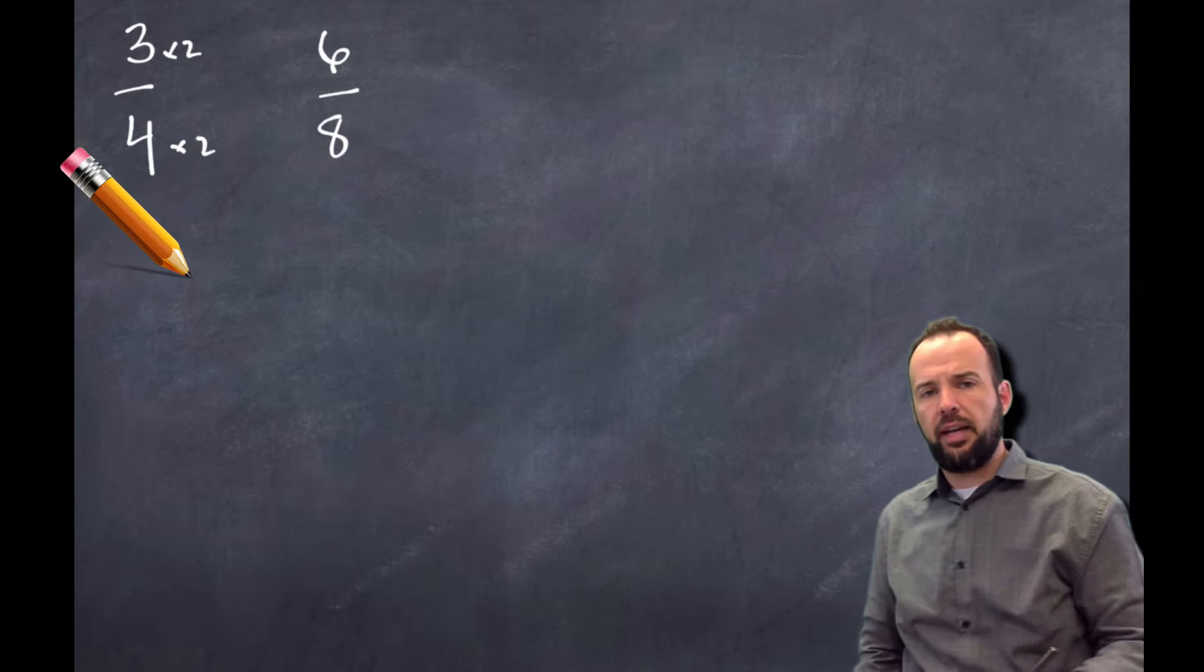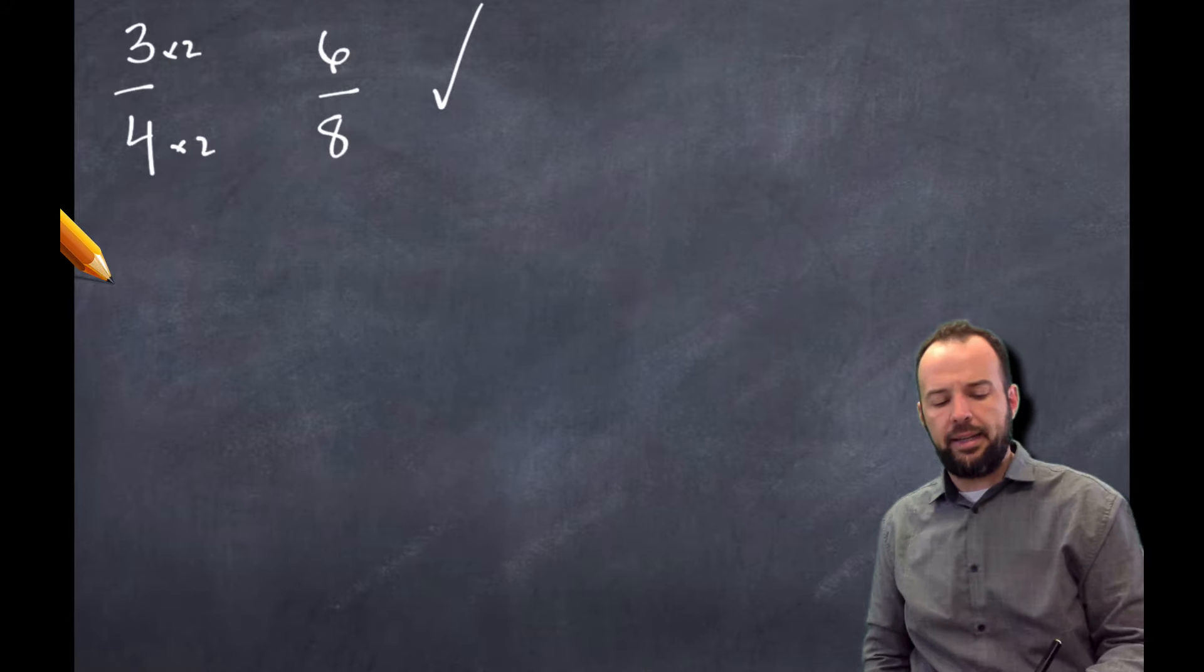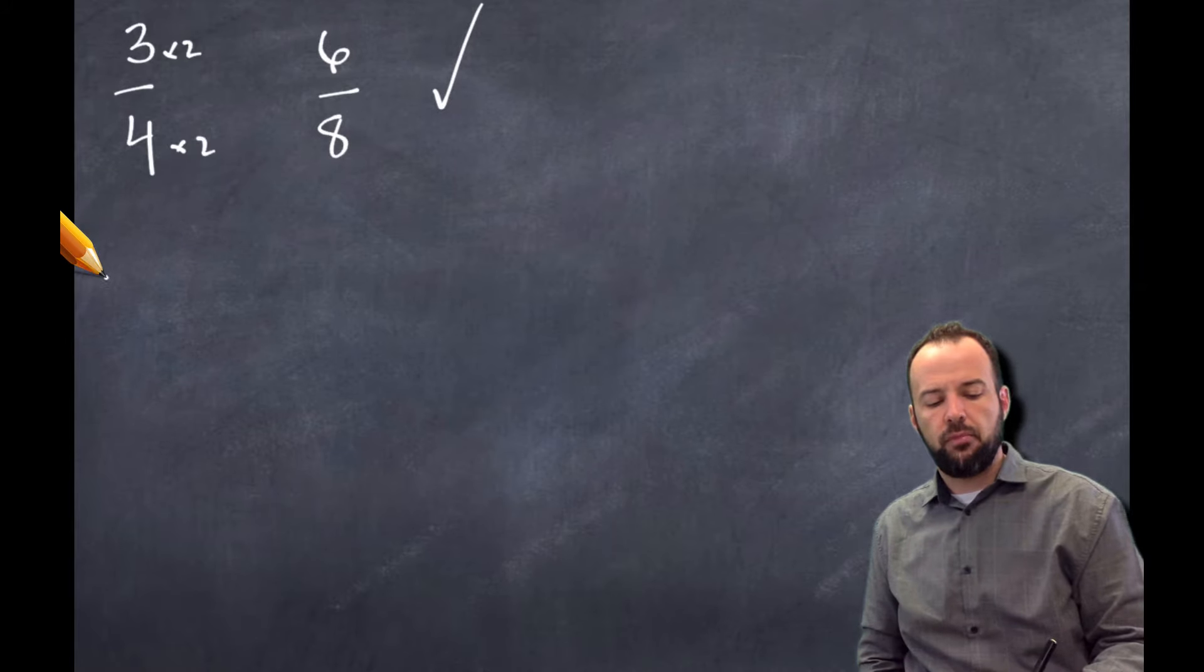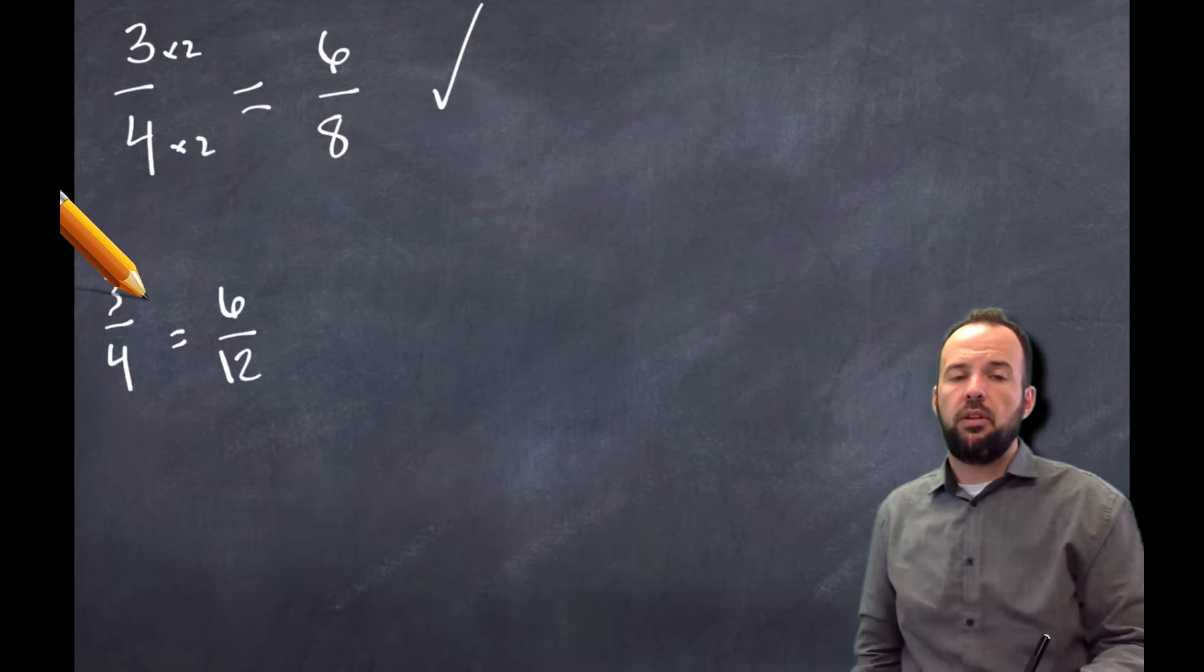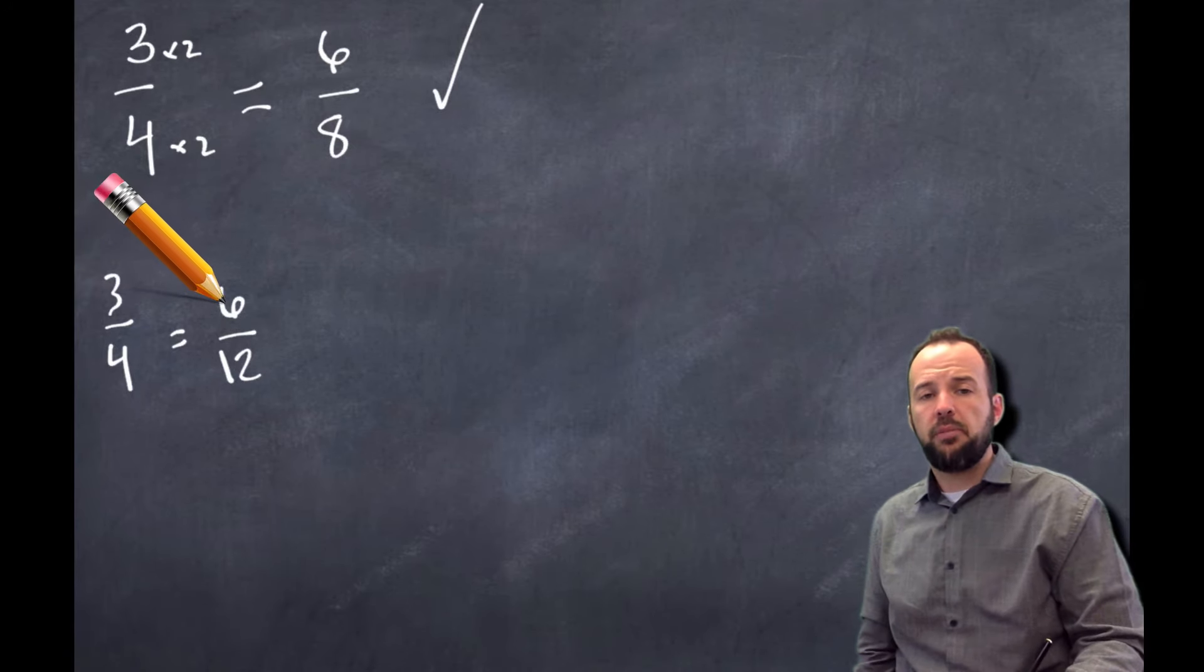What about if I had, let's see - yes, this guy checks out. What about if I had 3/4 and 6/12? Are they equivalent fractions? No, they're not. You might think, okay, well, yeah, 3 times 2 is 6. But if I did 4 times 2, I'm going to get 8.